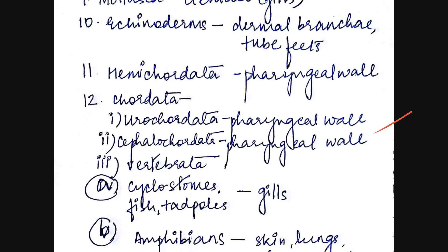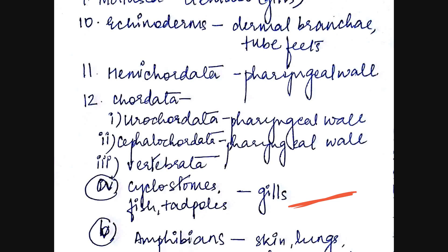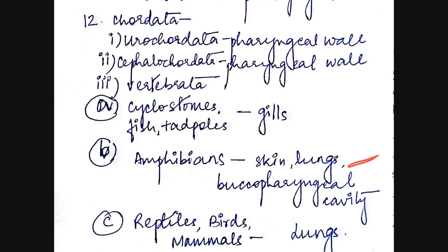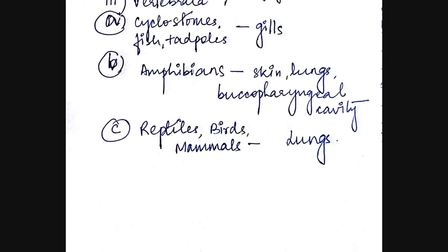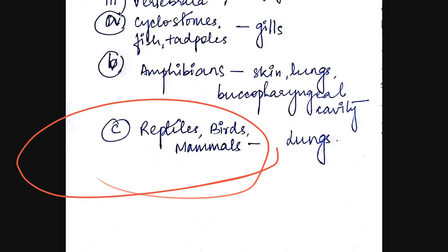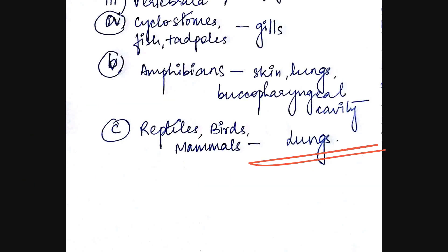The cephalochordata, for example branchiostoma, also respires through the pharyngeal wall. Within the vertebrates there are various subcategories. The cyclostomes, the fishes and the tadpole respire through gills. The amphibians, for example the frog, respire through skin, the buccopharyngeal cavity and lungs. And the third category is reptiles, birds and mammals, which all respire through the lungs.